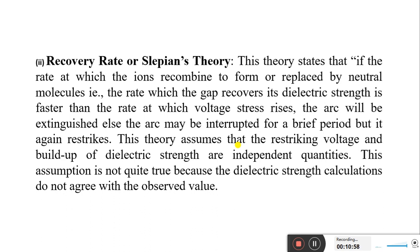This theory assumes that the restriking voltage and the buildup of dielectric strength are independent quantities. This assumption is not quite accurate because dielectric strength calculations do not always agree with observed values. However, the key point is: if you are able to build up dielectric strength between the contacts at a rate greater than the voltage stress applied across the circuit breaker contacts, the arc will be extinguished at a faster rate. That is what the recovery rate or Slepian theory states.